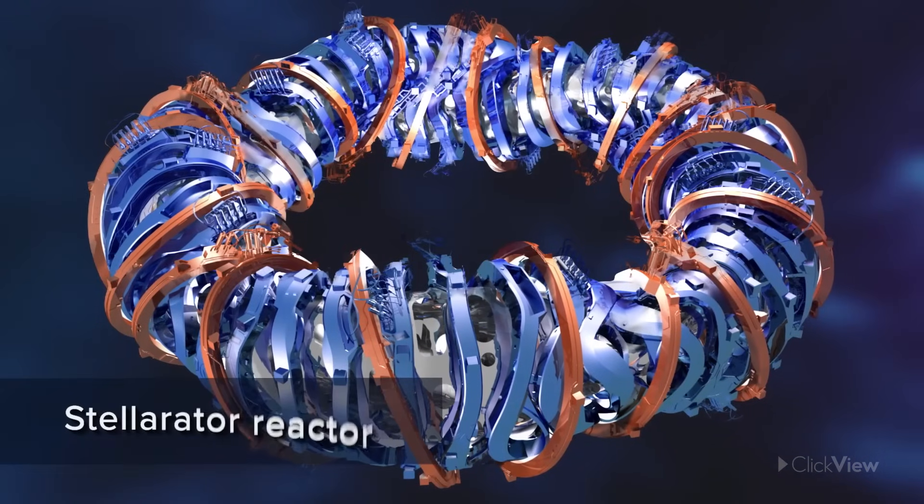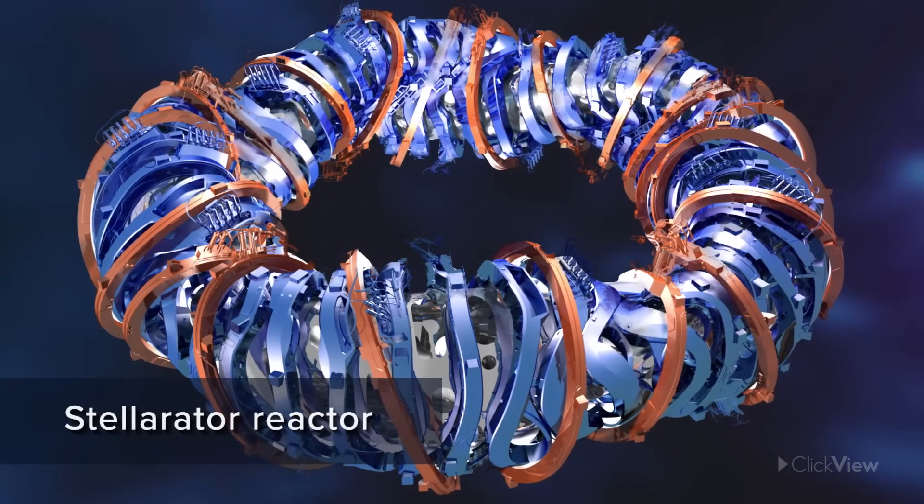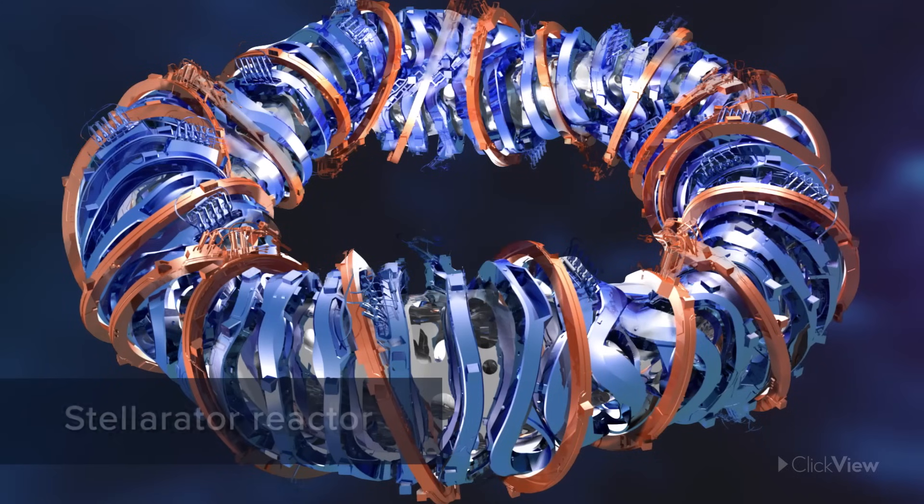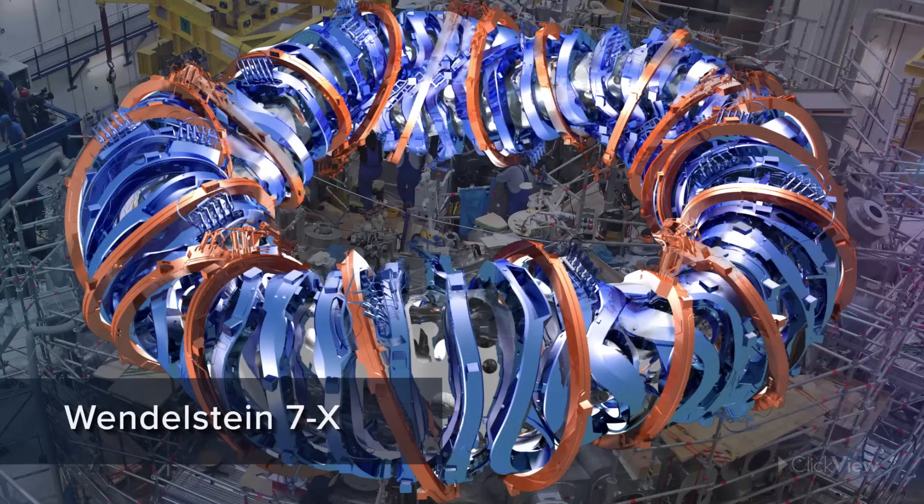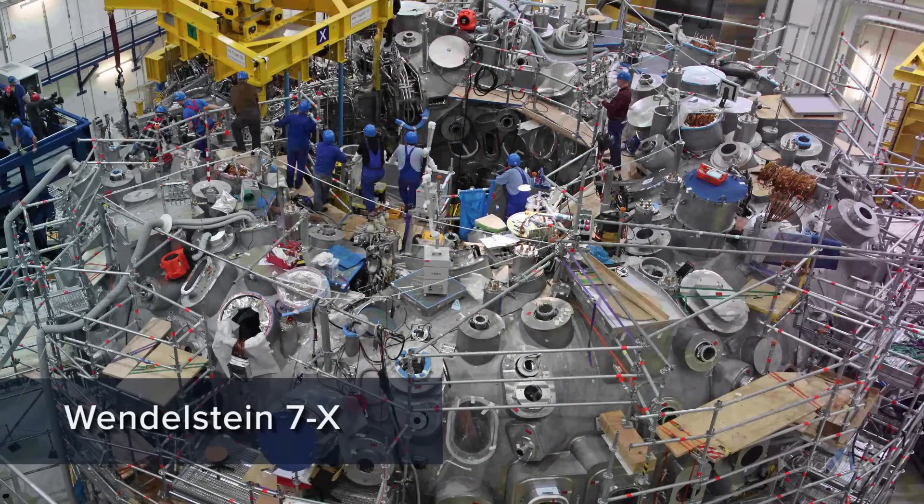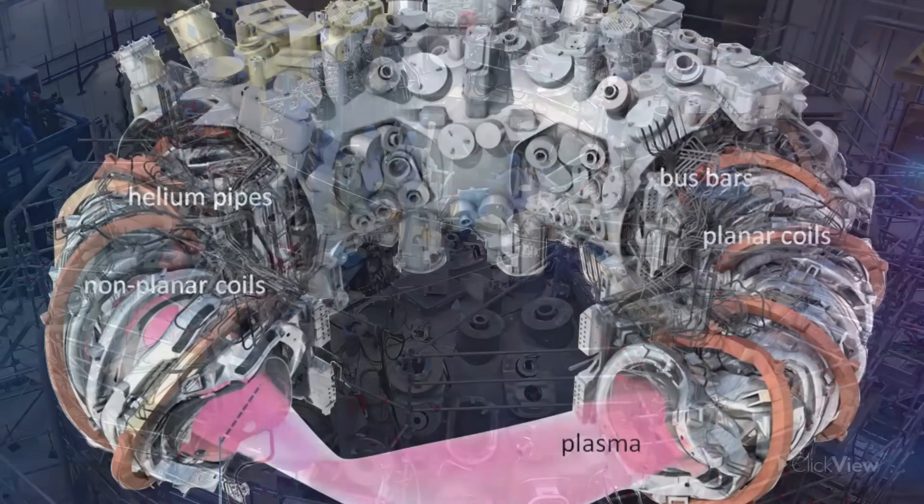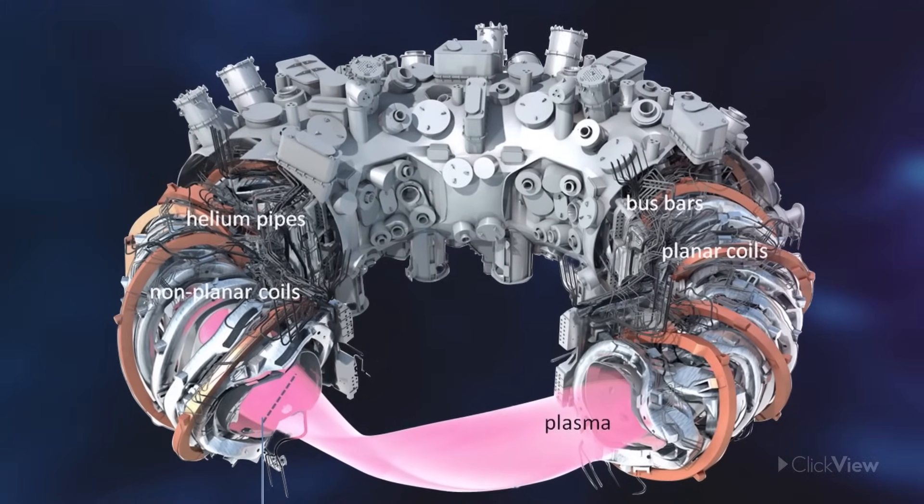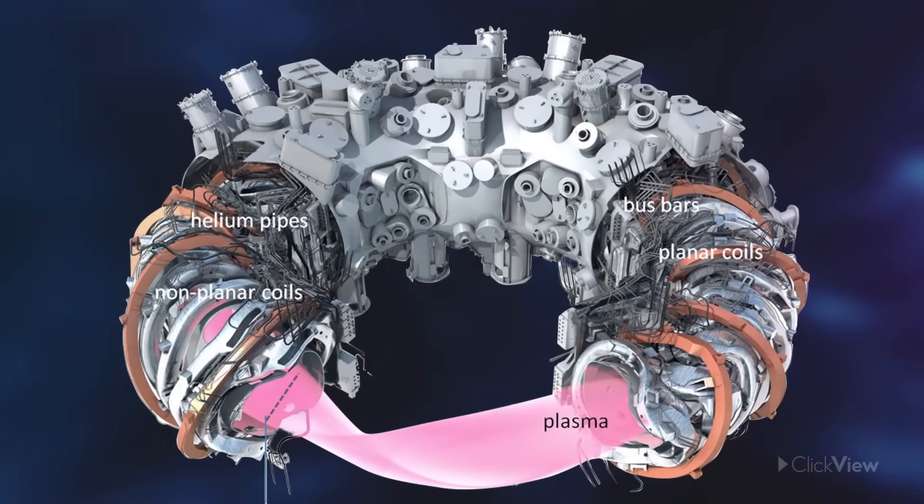Stellarator reactors use banks of magnetic coils to manage this task. Germany's Wendelstein 7X is leading the way in research on this form of fusion reactor. Its magnetic coils make the plasma easier to control, but at a cost. It's a lot harder to reach the high temperatures required.